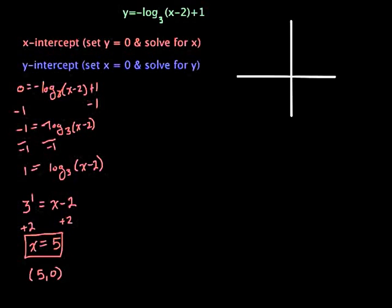Next, we're going to find the y-intercept. To do this, we're going to set the x equal to 0 and solve for y. So we're writing our equation out, y is equal to negative log base 3 of 0 minus 2 plus 1.